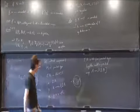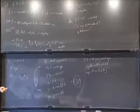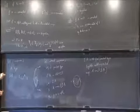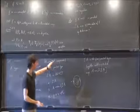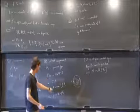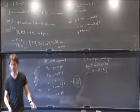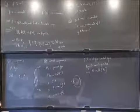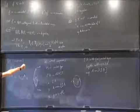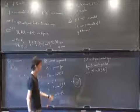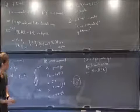When you take the loop space of something, intuitively you decrease the dimension — everything which was dimension one becomes dimension zero, every loop becomes a point. The suspension is basically the inverse operation: we take everything which is a point and turn it into a path, and everything which is a path in A we turn into a two-dimensional path. The loop space reduces the dimension, while the suspension increases it.